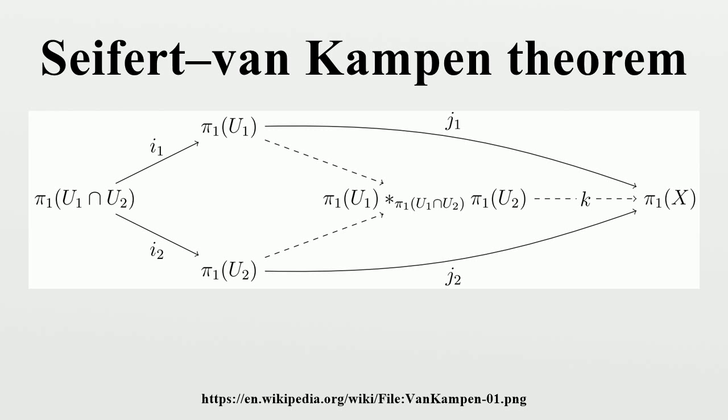This problem can be resolved by working with the fundamental groupoid on a set A of base points, chosen according to the geometry of the situation. Thus for the circle, one uses two base points. This groupoid consists of homotopy classes relative to the end points of paths joining points of A.